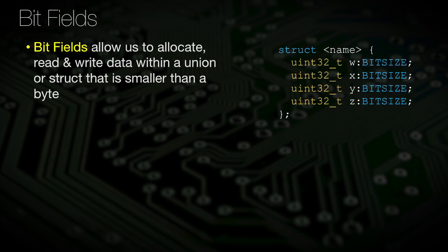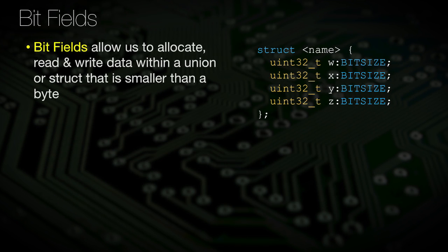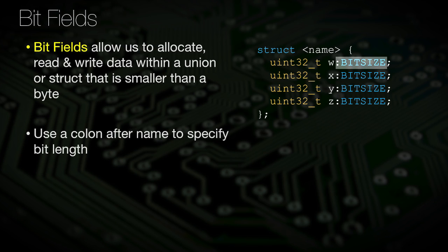Bitfields are a C programming feature that we can use with both unions and structures. By using a bitfield within these types, we can pack more data into a built-in type without wasting excess data space. Bitfields can be defined just like a normal member in a structure or a union, except you will add a colon after the bitfield variable name and then a bitfield width.